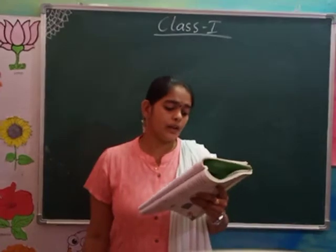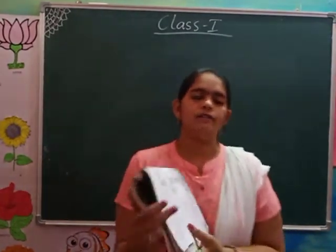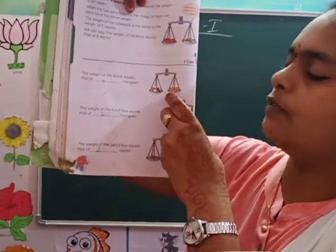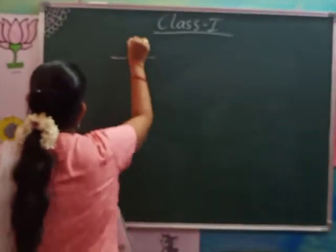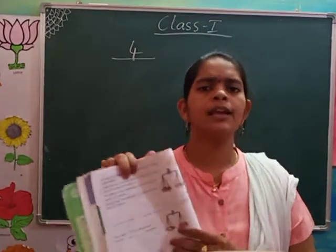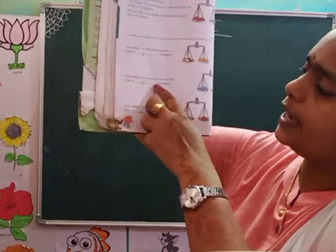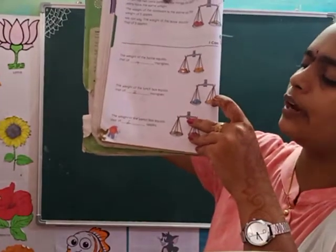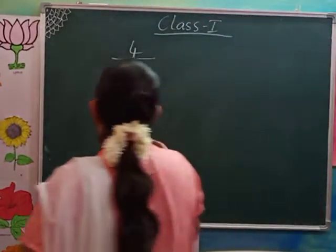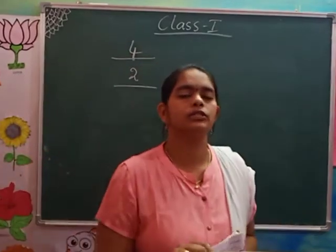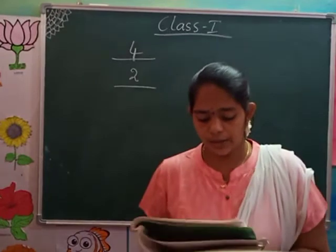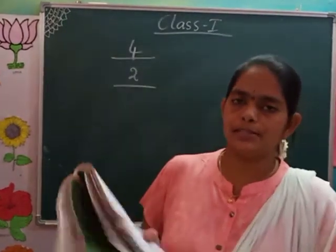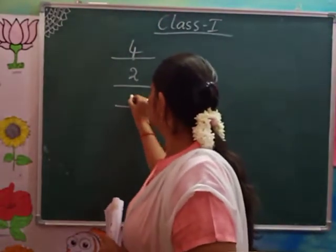And next: the weight of the bottle is equal to that of dash mangoes. How many mangoes? 1, 2, 3, 4 — equal to 4 mangoes, so write 4. The weight of the lunchbox equals how many mangoes? 1, 2 — write 2. The weight of the pencil box equals how many apples? 2 apples — write 2.